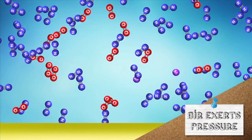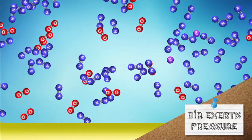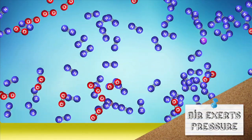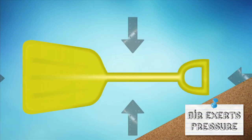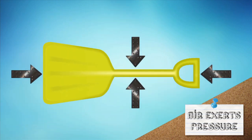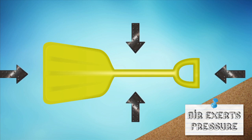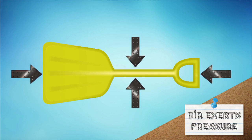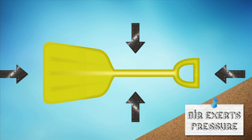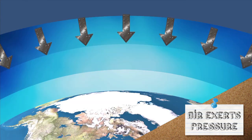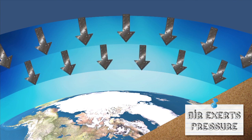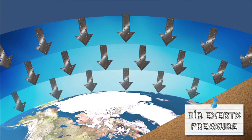Air pressure is the force exerted by the weight of air molecules on any surface they contact. In the atmosphere, because the air is all around us, air pressure is pressing on everything uniformly from all directions. And it's not just pressure from the air that objects contact directly — all the air in the atmosphere above us is pressing down on the air below it, and ultimately on objects near the Earth's surface.